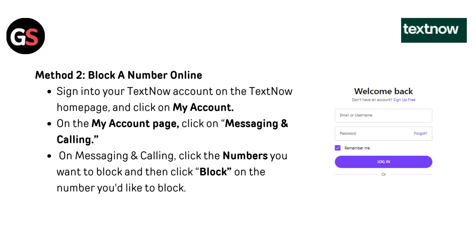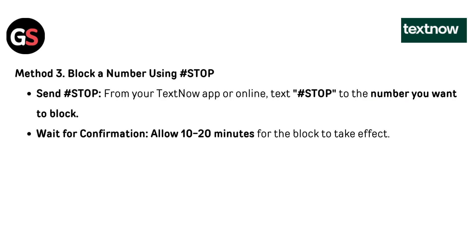Method two: block a number online. Sign into your TextNow account on the TextNow homepage and click on My Account. On the My Account page, click on Messaging and Calling. Click the numbers you want to block, then click block on the numbers you would like to block.